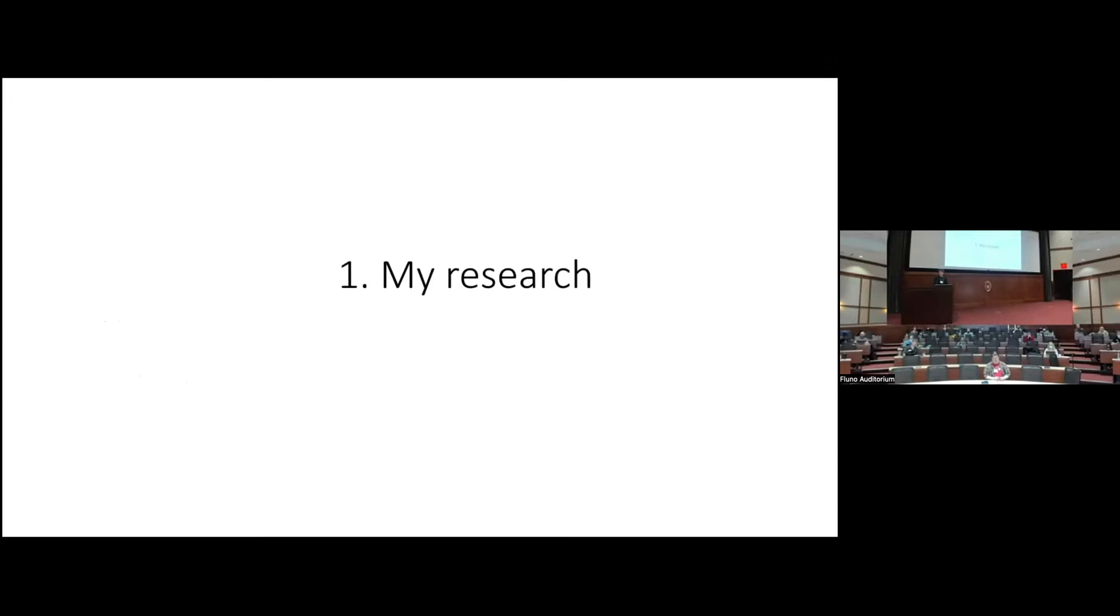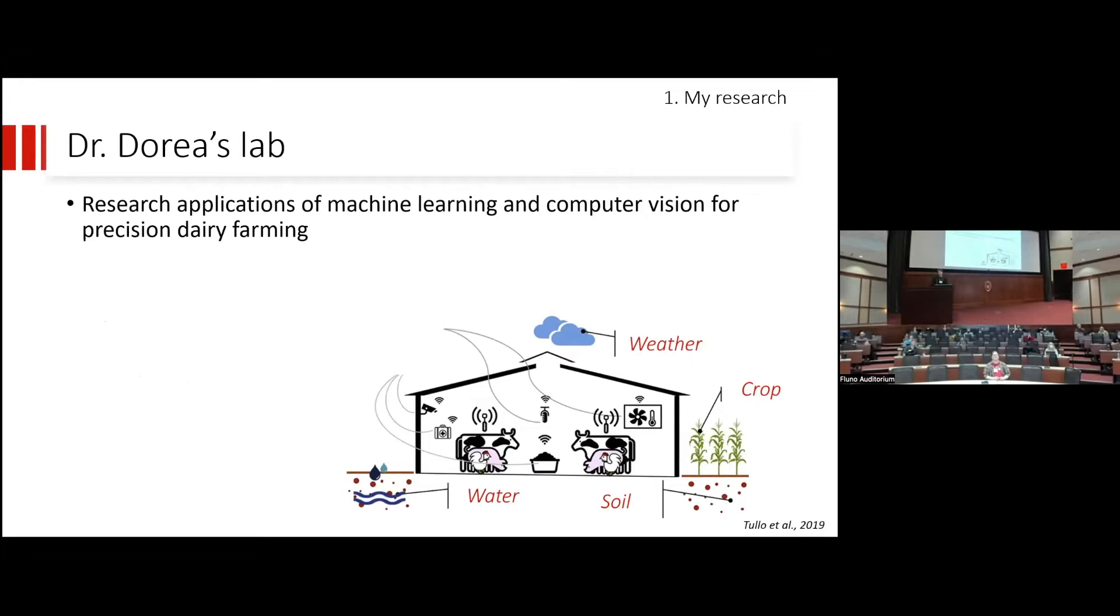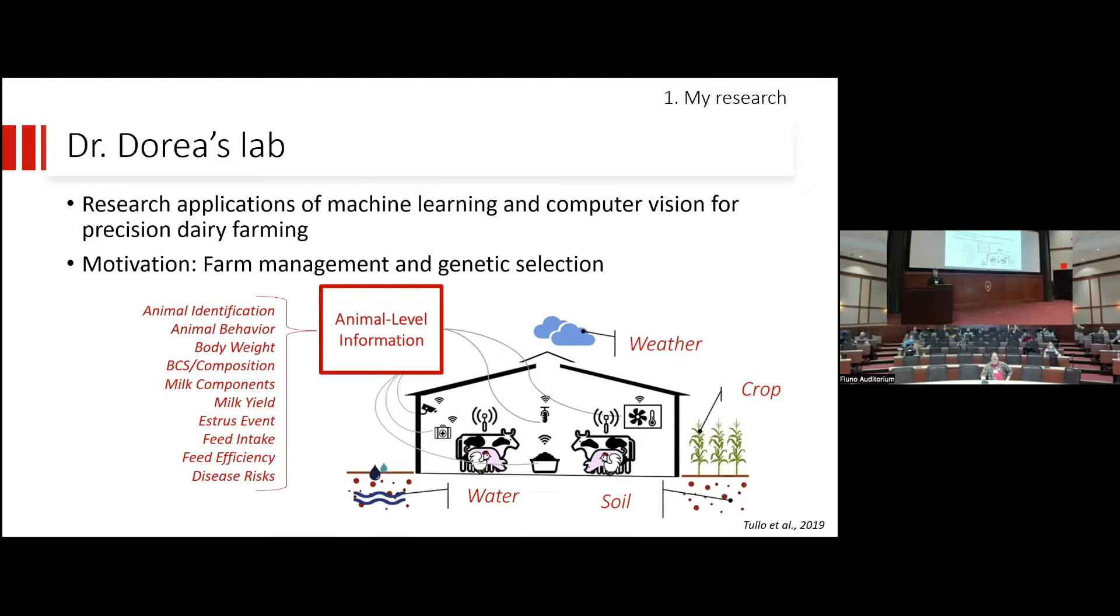Starting with my research, I work at Dr. Doria's lab. Last year he presented at the CHTC week as well. Basically, what we do is develop applications of machine learning and computer vision for precision dairy farming. What it means is that we try to have a more data-driven approach for dairy farm management and for genetic selection of the animals in the herd. In order to do that, we need individual animal-level information to make smarter decisions in the farms and identify the individuals that are the best performing within the herd so we can improve genetic selection. This animal-level information goes from evaluating social interactions, behavior, specific information about the body shape that could help us detect risk of diseases, for example.